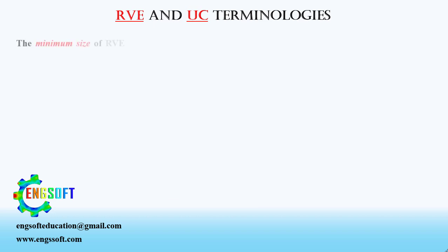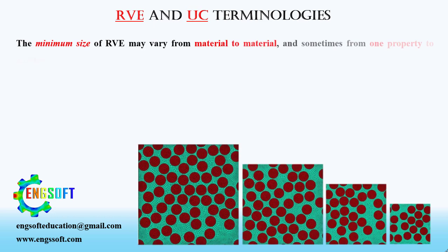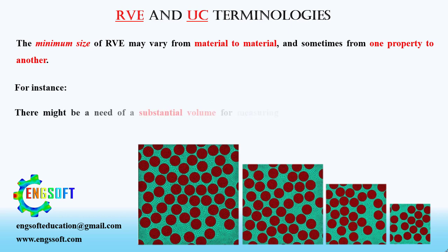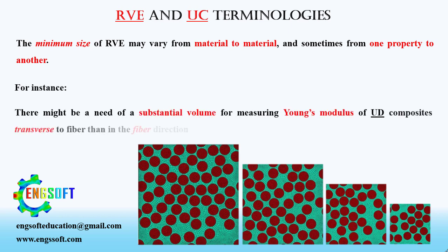The minimum size of RVE may vary from material to material, and sometimes from one property to another. For instance, you might need a substantially larger volume for measuring Young's modulus of UD composites transverse to the fiber direction than in the fiber direction. We will talk about how to obtain an appropriate size of RVE in a future video.